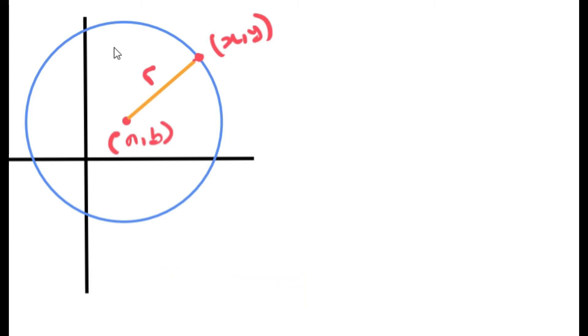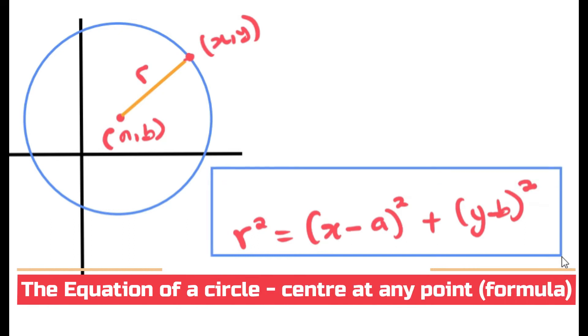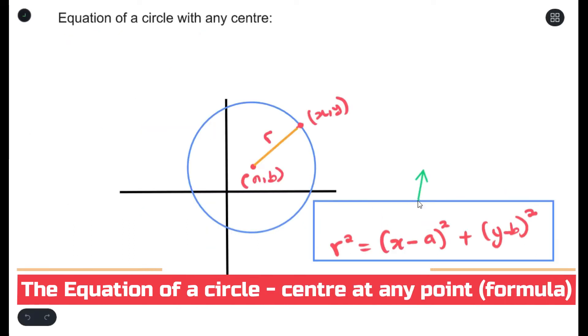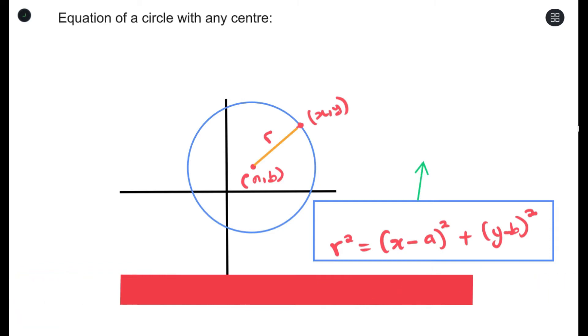So to calculate this, what we normally do is use a distance formula. And the distance formula is r-squared equals... And this distance formula here would be the equation that we use. Whenever you're trying to find the equation of a circle, but the center is not at the origin, but any other coordinates, we normally use this formula.